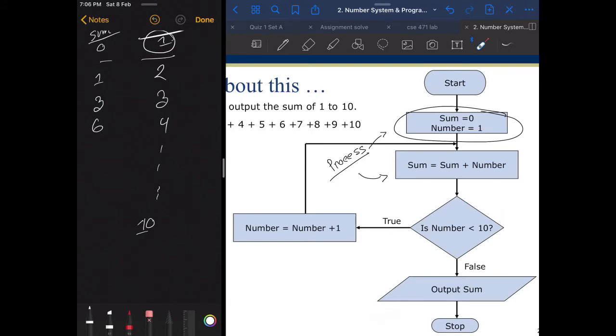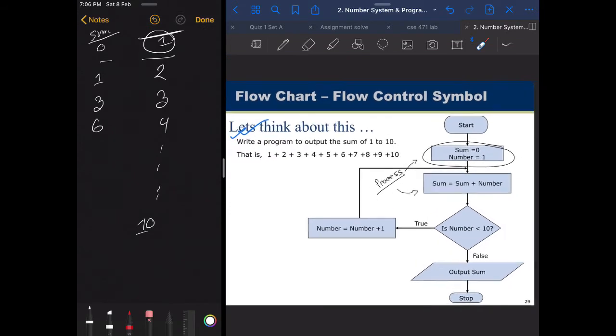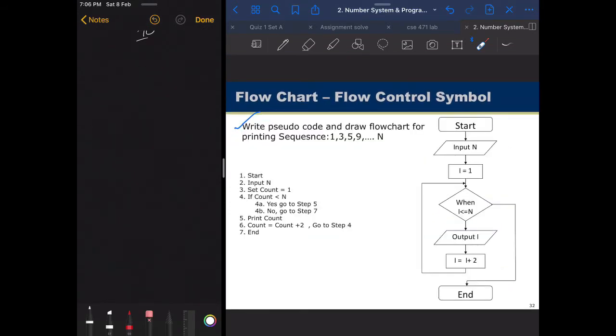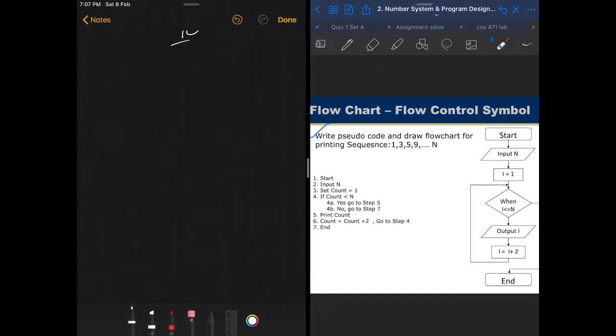We're going to look into some harder examples. So in this example, the question is: let's write a pseudo code and draw a flowchart for printing sequence 1, 3, 5, 9 up to N.